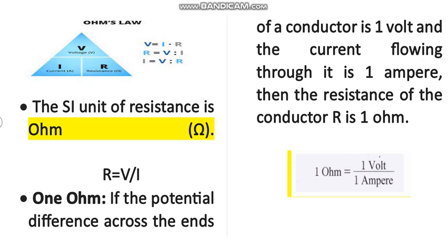This triangle is a visual representation of the mathematical relationship V equals I times R. Here V is voltage, I is current, and R is resistance. If you calculate V, then I and R are both in the denominator. R equals V divided by I, and I equals V divided by R.